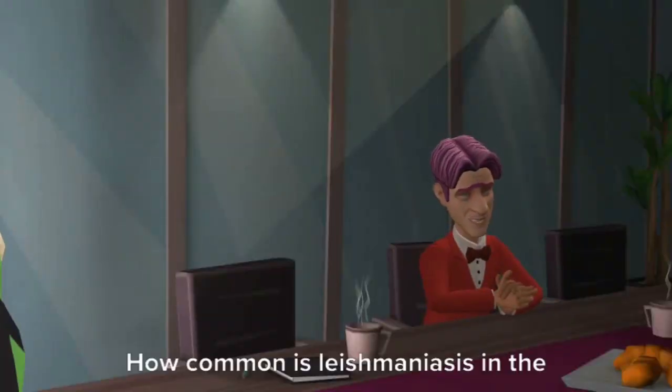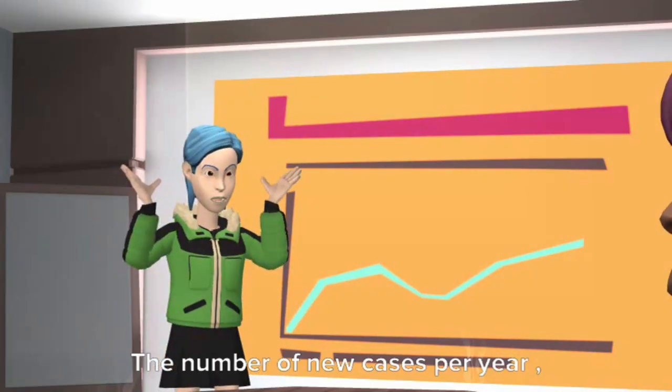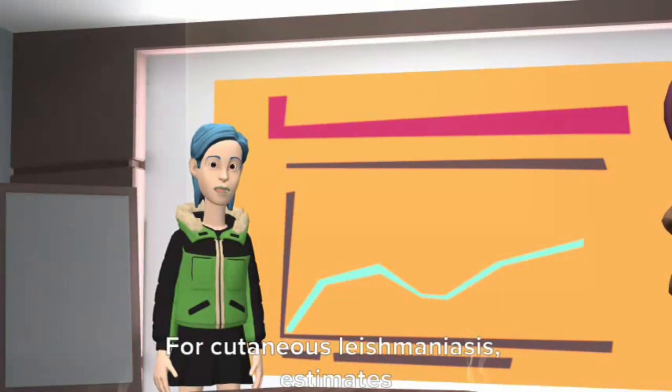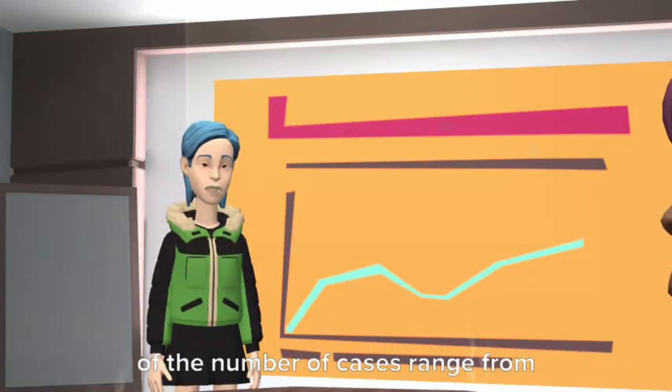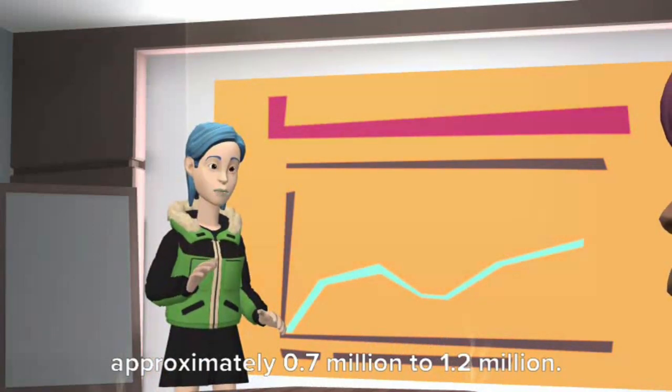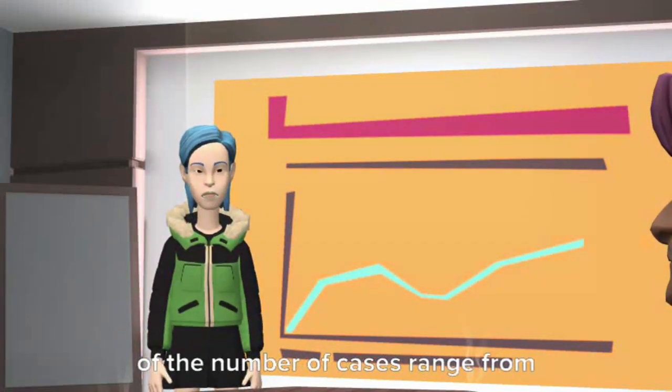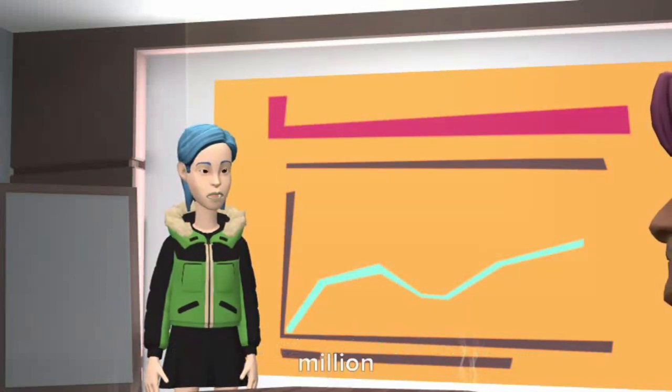How common is Leishmaniasis in the world? The number of new cases per year is not known with certainty. For Cutaneous Leishmaniasis, estimates of the number of cases range from approximately 0.7 million to 1.2 million. For Visceral Leishmaniasis, estimates range from approximately 0.2 million to 0.4 million.